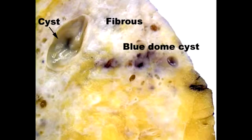What is fibrocystic change of the breast? Fibrocystic change of the breast is when there is a non-cancerous breast lump, which can sometimes cause discomfort. These lumps are usually related to hormonal influences from the menstrual cycle. The lab or diagnostic finding observed with fibrocystic change of the breast is a mammary gland with blue-dome cyst.